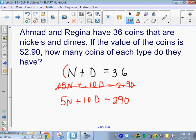So, I'm going to multiply the top equation by negative 10, and I'm going to rewrite it down here below the one I just wrote. So, this is negative 10N, and then negative 10 times D is negative 10D, and then negative 10 times 36 is negative 360.